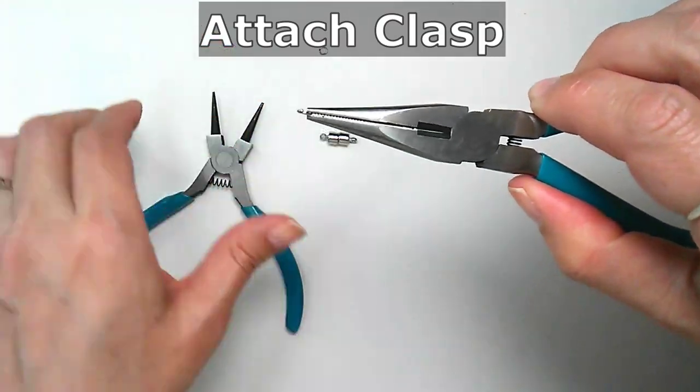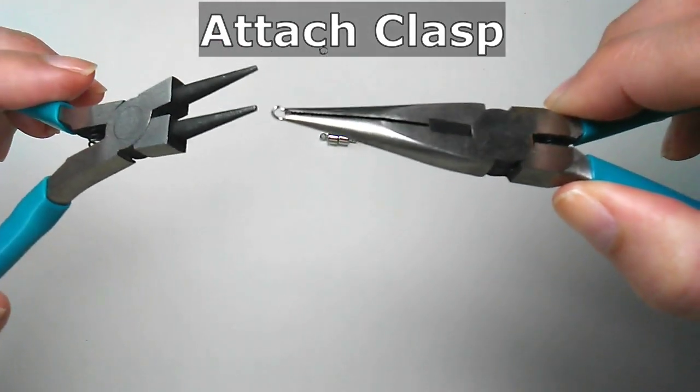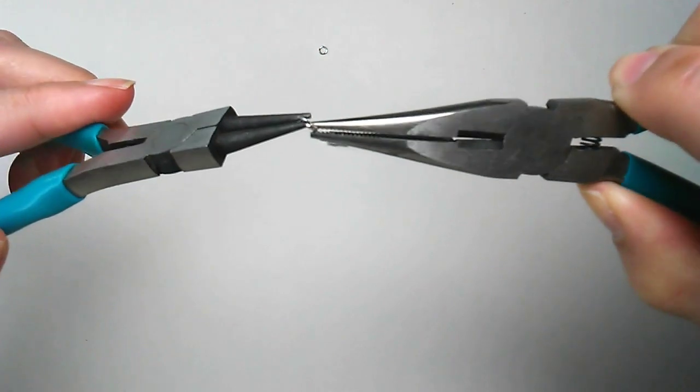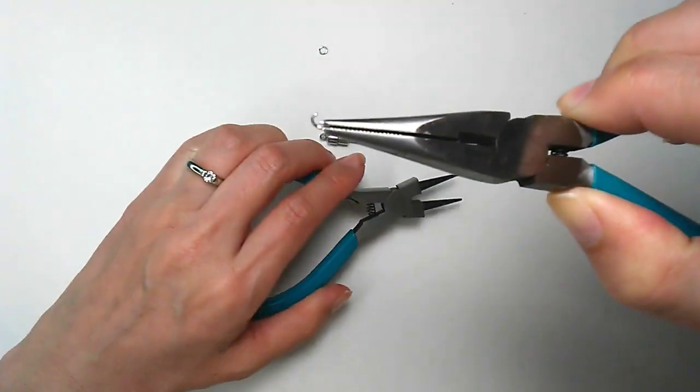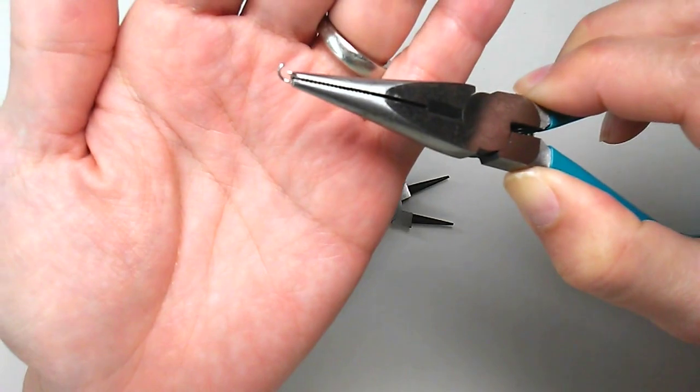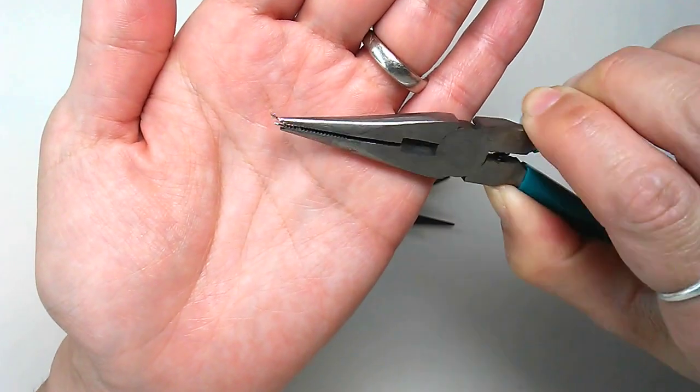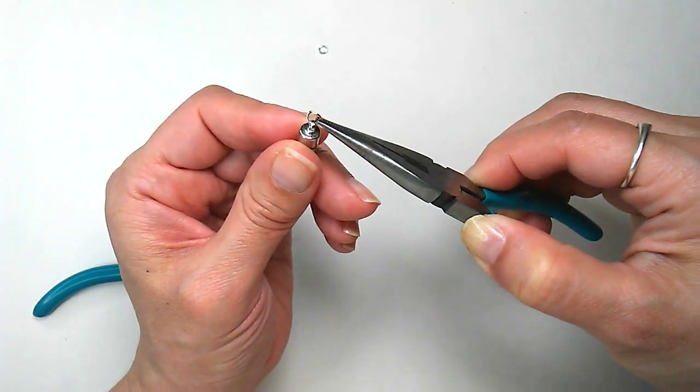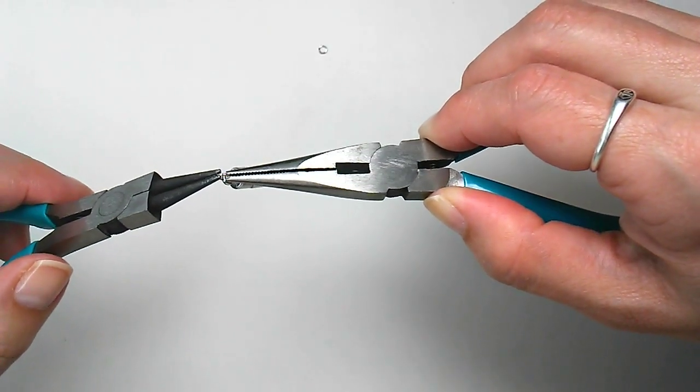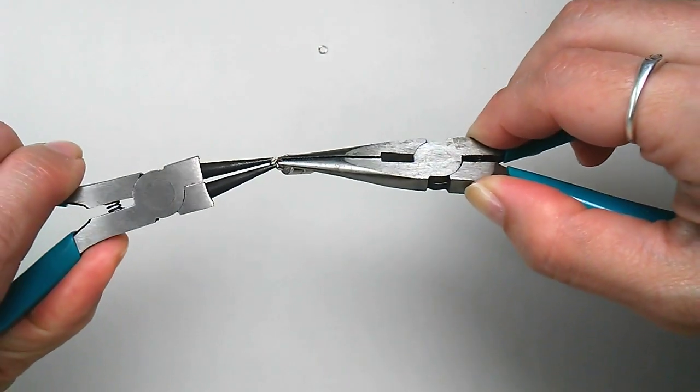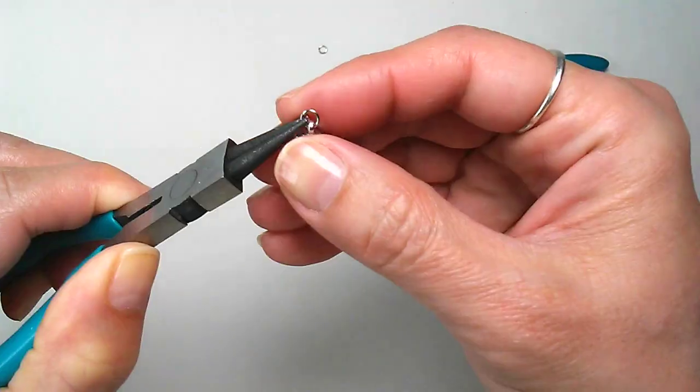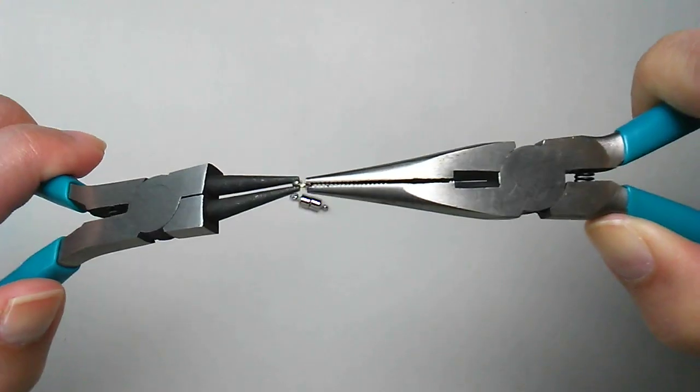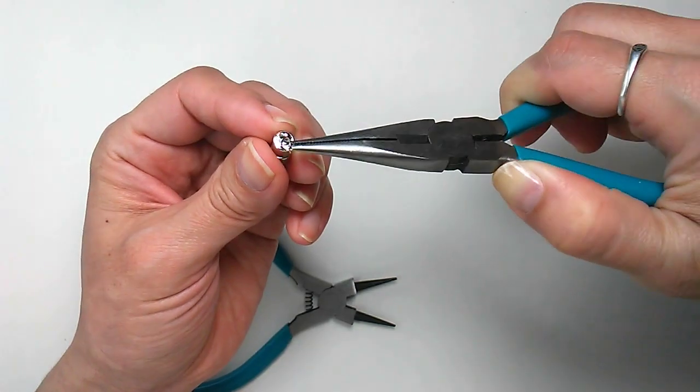I'm going to use some needle nose pliers to twist open a jump ring. Slide it onto one end of the clasp and twist the jump ring closed. Then do the same thing on the other end so there's a jump ring on both sides.